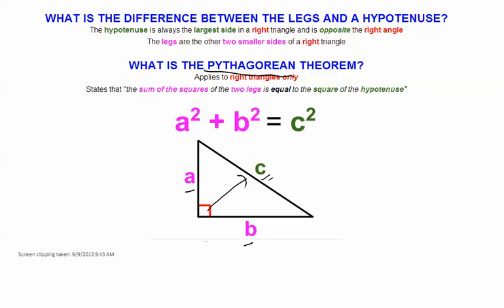This Pythagorean Theorem only applies to right triangles, so please don't do them on any other triangle, only right triangles. And what it says is A squared plus B squared is equal to C squared.